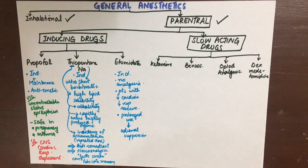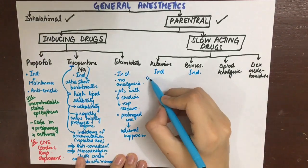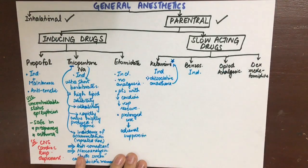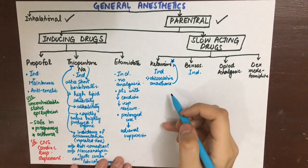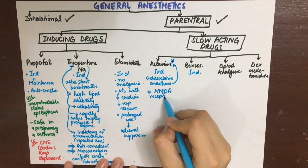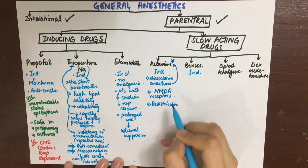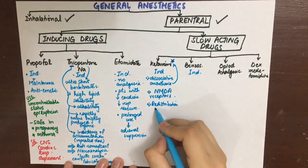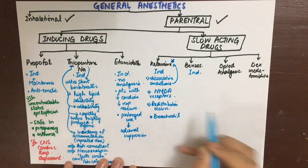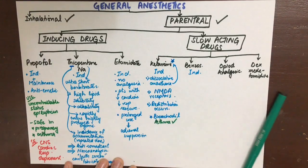Ketamine causes dissociative anesthesia — the out-of-body experience where you feel you are in the operating theatre but are looking at yourself from above. It causes sedation, analgesia, amnesia, and unresponsiveness to commands. Its mechanism of action is blocking the NMDA receptors.